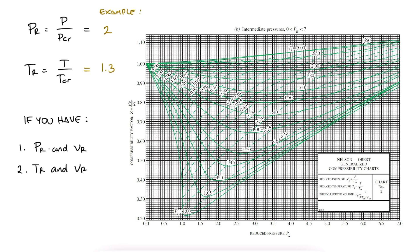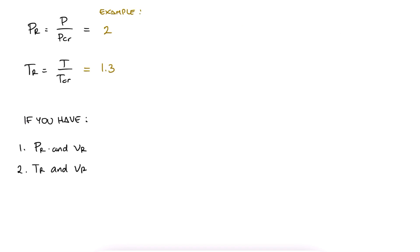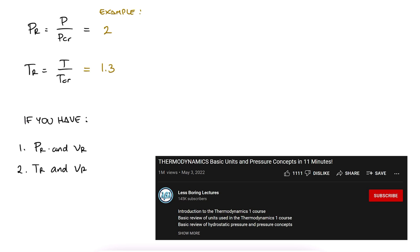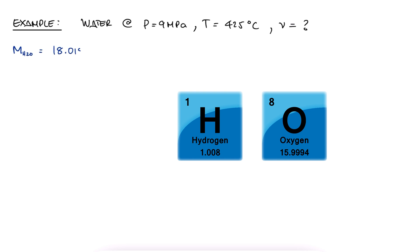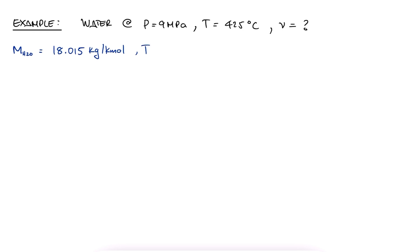Let's use a very short example that makes use of the state equation and compressibility charts, and if you want to check out longer, more complex examples on this topic, make sure to check out the links found in the description. Let's say we have water vapor at 9 MPa and 425 degrees Celsius, and we want to find the specific volume. We know that the molecular mass of water is 18.015 kg per kmol, that the critical temperature is 647.1 Kelvin, and that the critical pressure is 22.06 MPa.